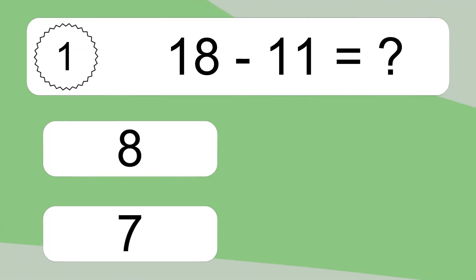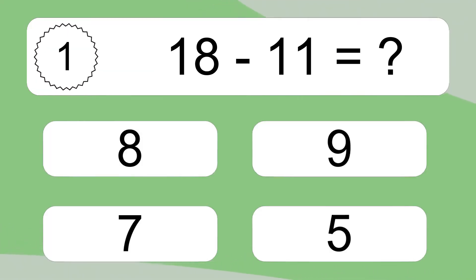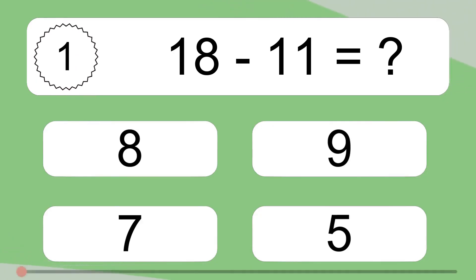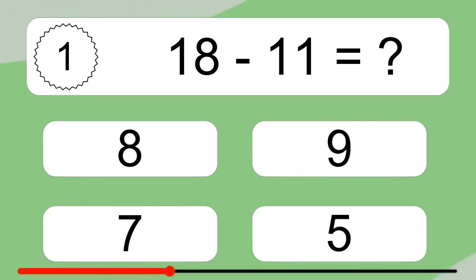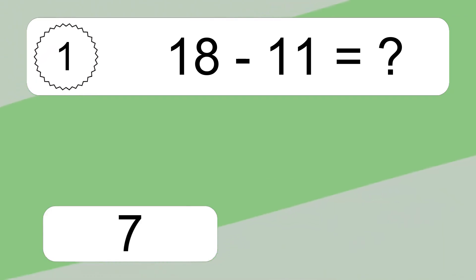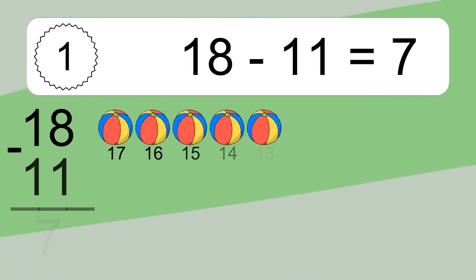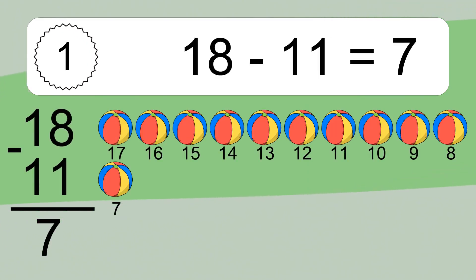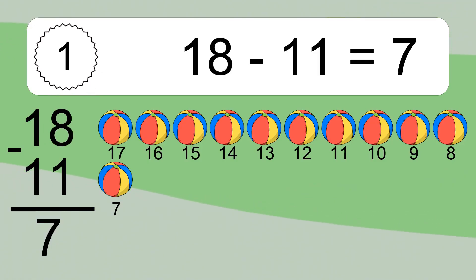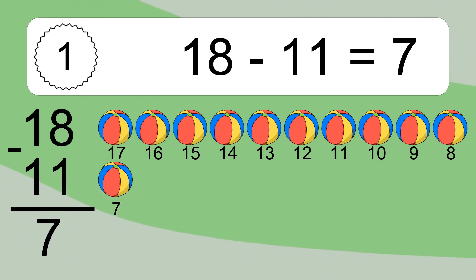18 minus 11 equals what? 18 minus 11 equals 7. Let's count it. 17, 16, 15, 14, 13, 12, 11, 10, 9, 8, 7.